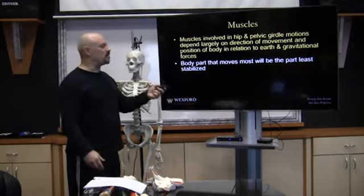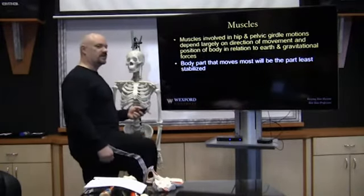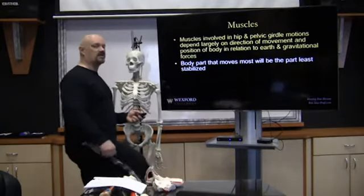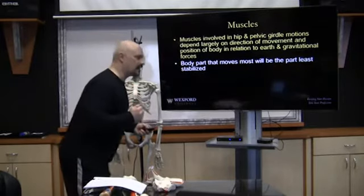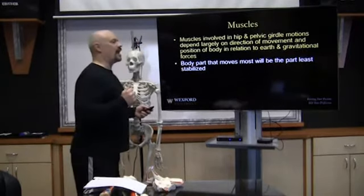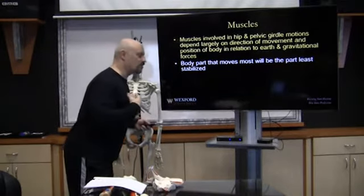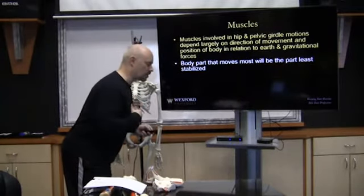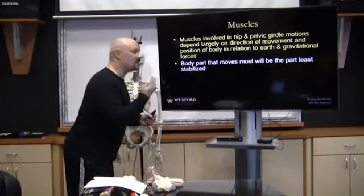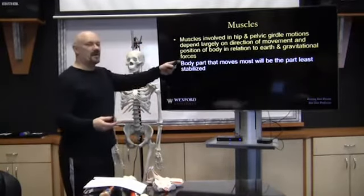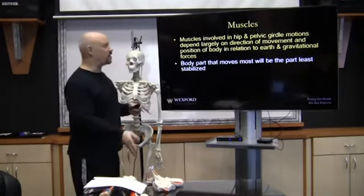The body part that moves most will be the least stabilized. If we look at hip flexion, this is going to be very unstable because it's free to move. Same if we're doing a good morning — it's against gravity. The hamstrings and glutes work while the back is stable via the erector spinae, but the movement is at the hips. Gravity acts on our center of mass, and as we stick our butt back, our hamstrings are lengthening to oppose gravity and slow the trunk from moving too fast.